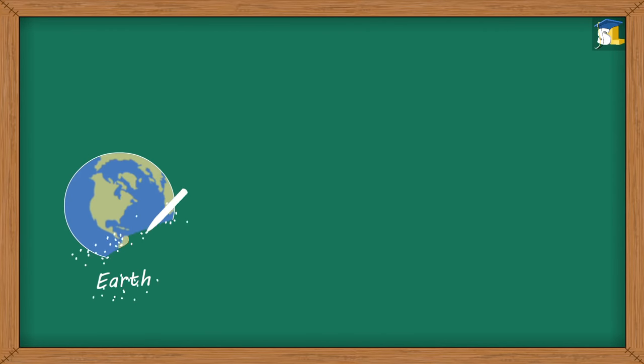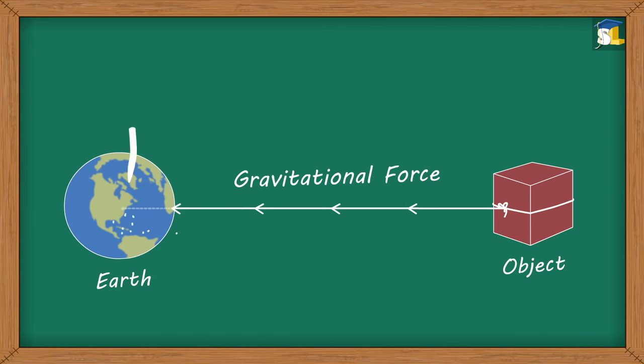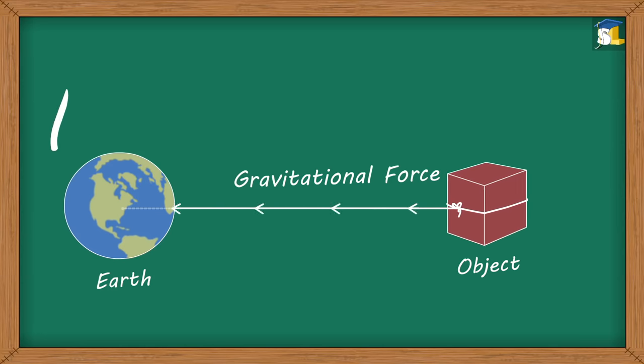On Earth, many forces act on an object. One of them is gravitational force of the Earth. Gravitational force of the Earth is the force which pulls all the objects downwards, that is, towards the center of the Earth.